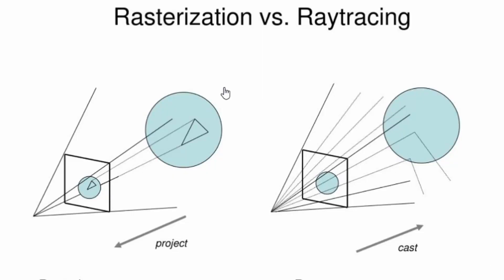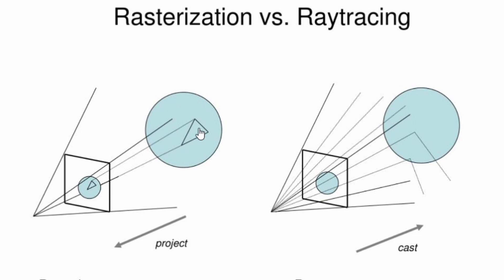The simplest way to explain the difference between rasterization and ray tracing is by looking at this picture over here. On the left you can see rasterization, on the right you can see ray tracing. They look quite similar, so what's the difference? In rasterization, we actually have an object in the scene and then we use various kinds of math operations to project it onto a 2D plane — pure math magic to project it onto this surface.